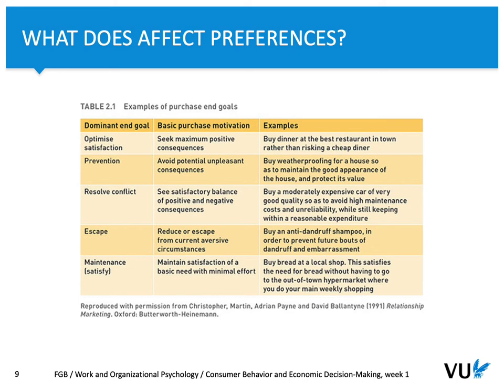The final goal is to satisfy. In this case, a consumer can decide to choose one of the options that satisfies their basic needs to a minimum level. For instance, if you just want to satisfy your need to eat, you can either decide to buy a fancy meal in a fancy restaurant, or you can just go to a local shop and buy some bread.